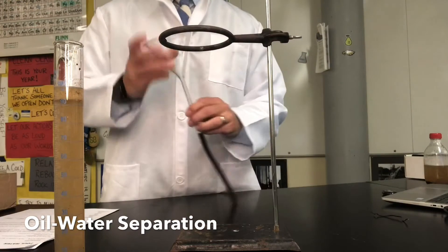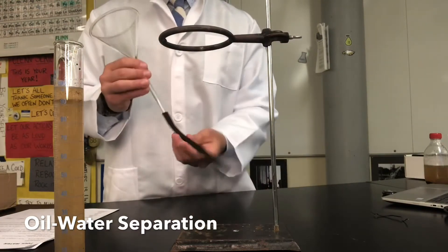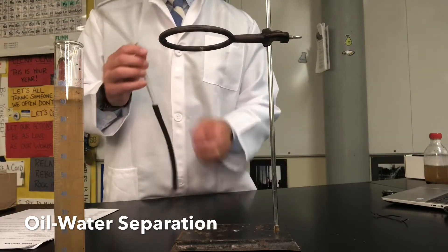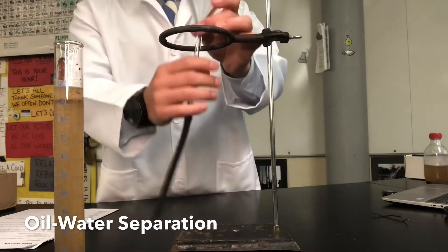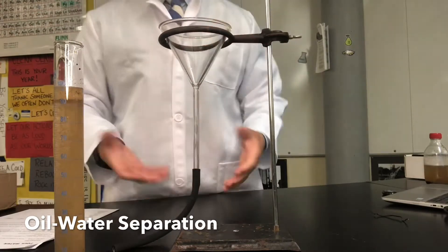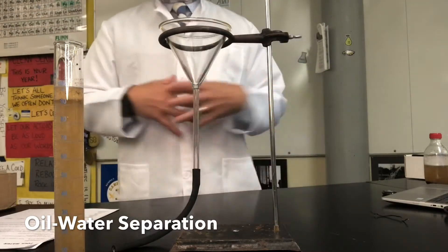For oil water separation we're actually going to be using a glass funnel with a little tube at the end. We're going to take advantage of the fact that oil and water are immiscible, meaning they don't like to mix together.